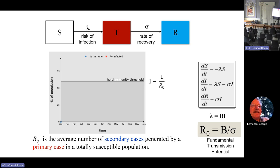In the SIR model you take the population and put them into different compartments: are you Susceptible, Infected, or Recovered and therefore immune? You have a bit of plumbing that takes you from susceptible to infected due to the risk of infection, and from infected to recovered at a particular rate sigma. From these equations you can derive the expression for R-naught, or R₀, which has been used profusely in the literature and media.